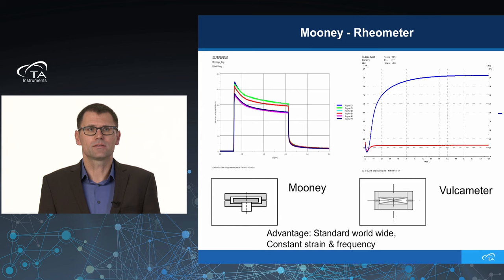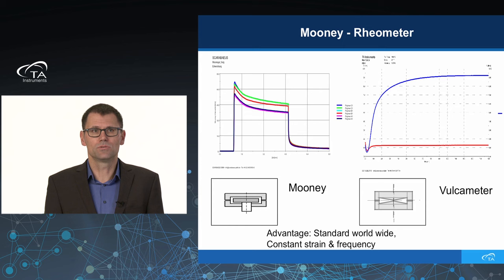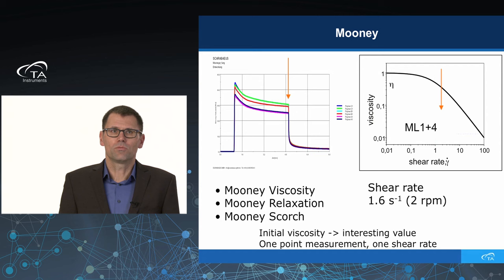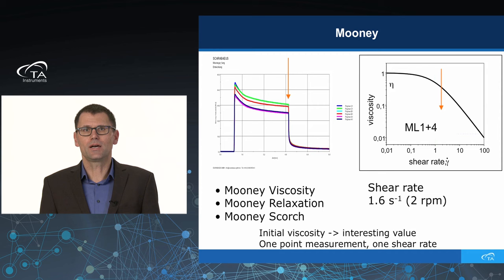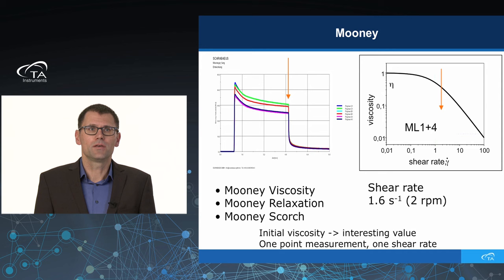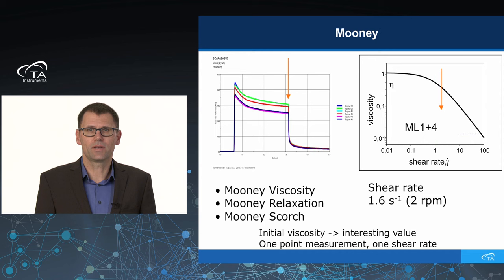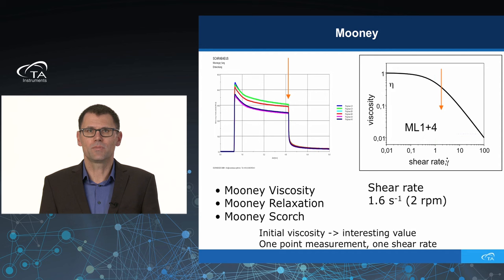I want to start with the Mooney viscosity, which has a worldwide standard. It is measured at constant strain and constant frequency — at two RPMs, for example. When you measure the Mooney viscosity, a typical curve shows a one-minute pre-heat time, a four-minute test time, and a two-minute relaxation time. If you calculate the Mooney viscosity — for example, the ML 1+4 — and plot this value on the viscosity curve, you see very well that we measure only at one shear rate. It is a one-point measurement, providing only a small piece of information.